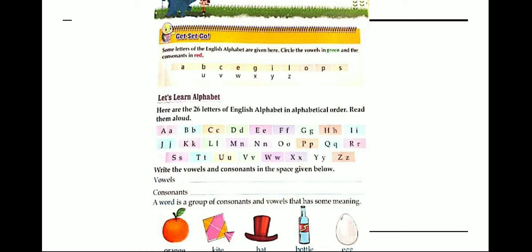How many vowels are there? There are 5 vowels, which are A, E, I, O, U.